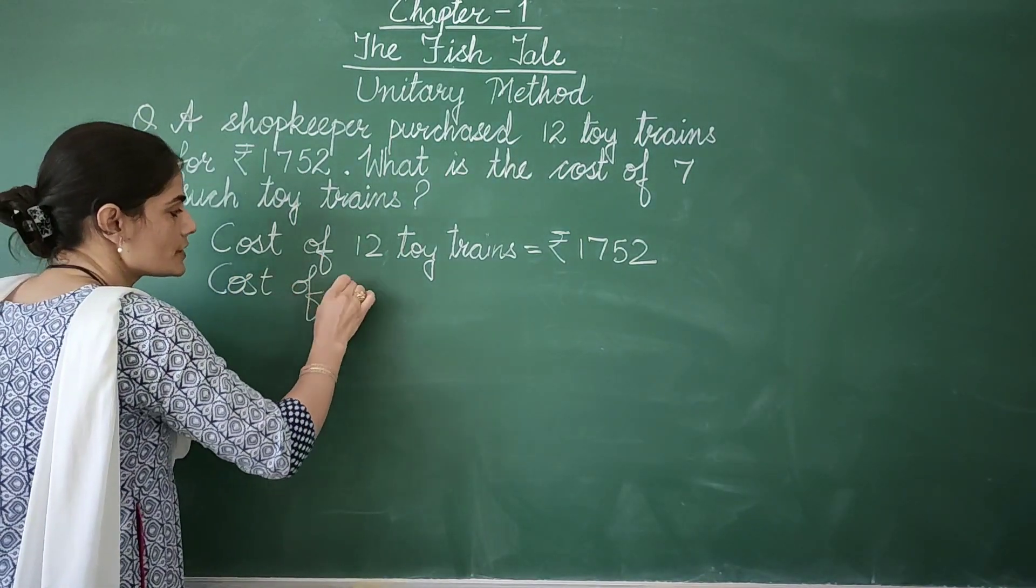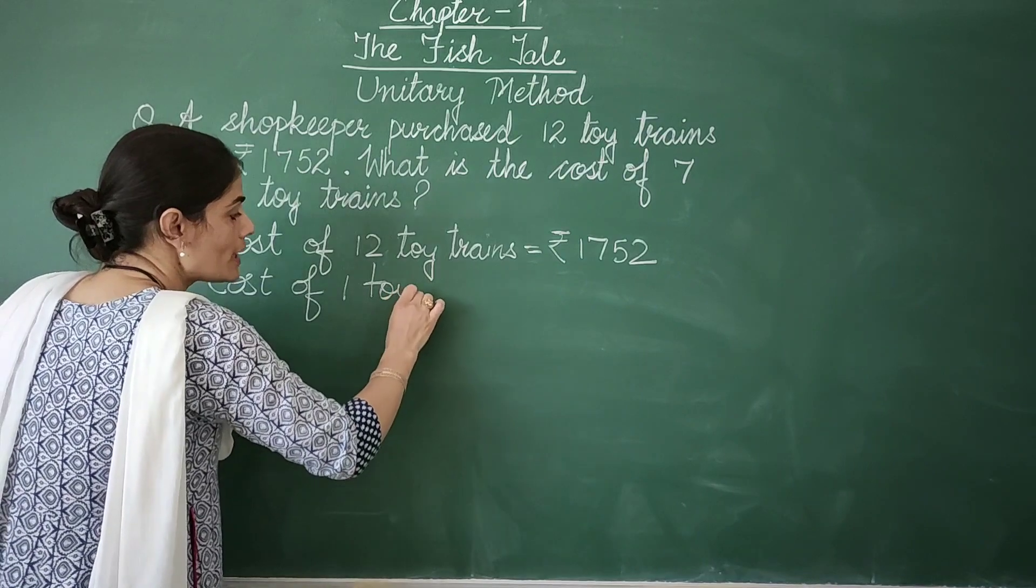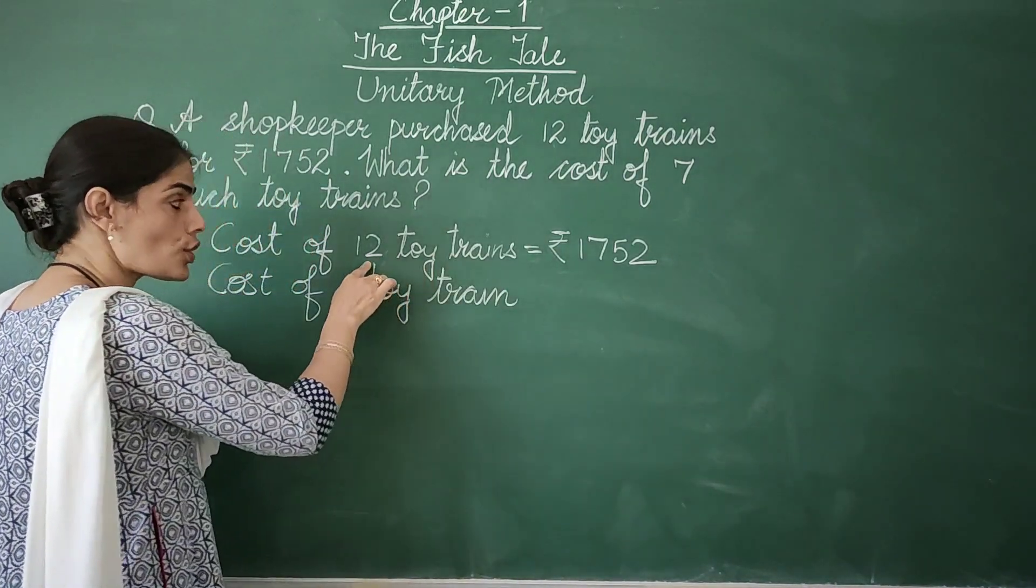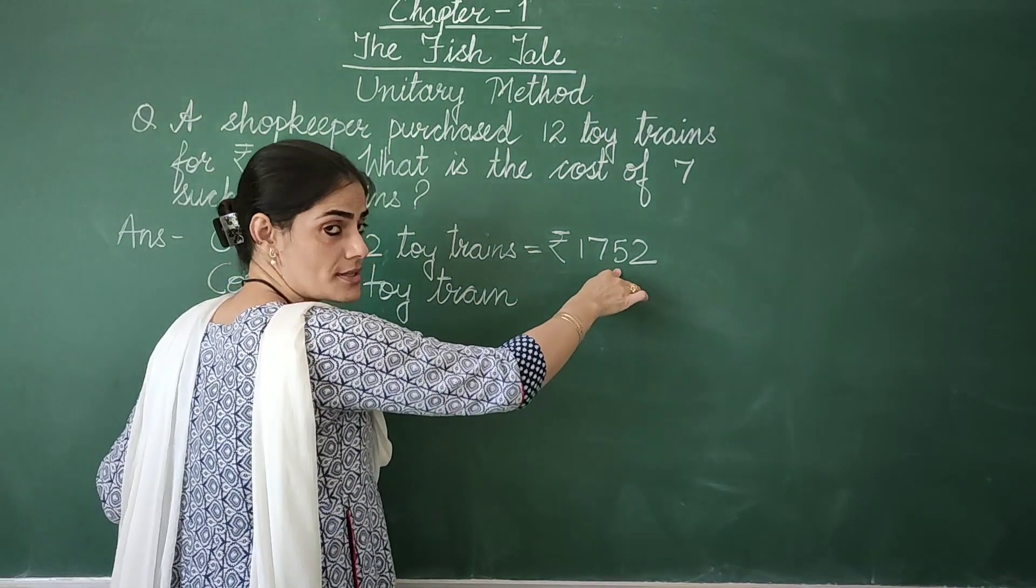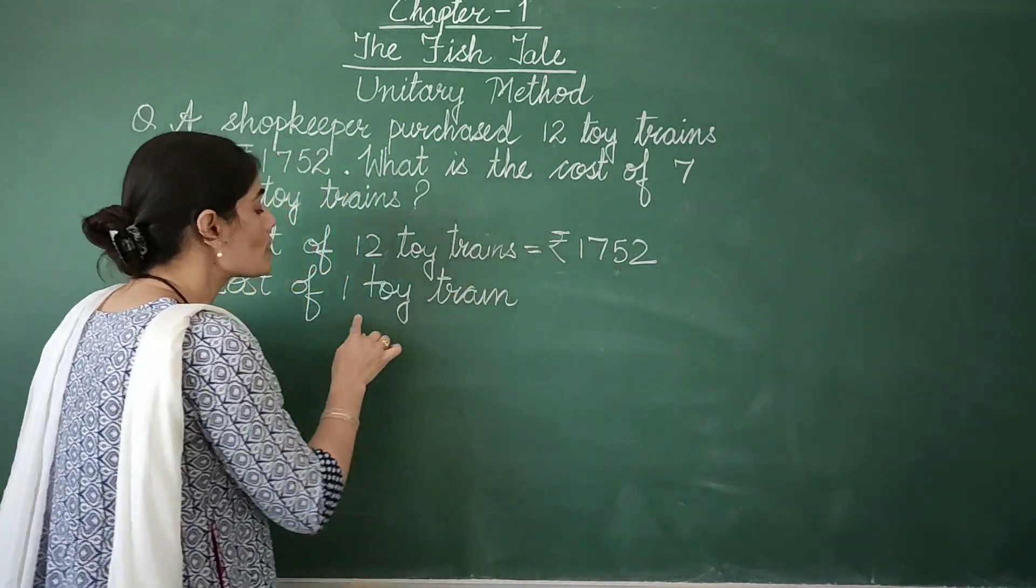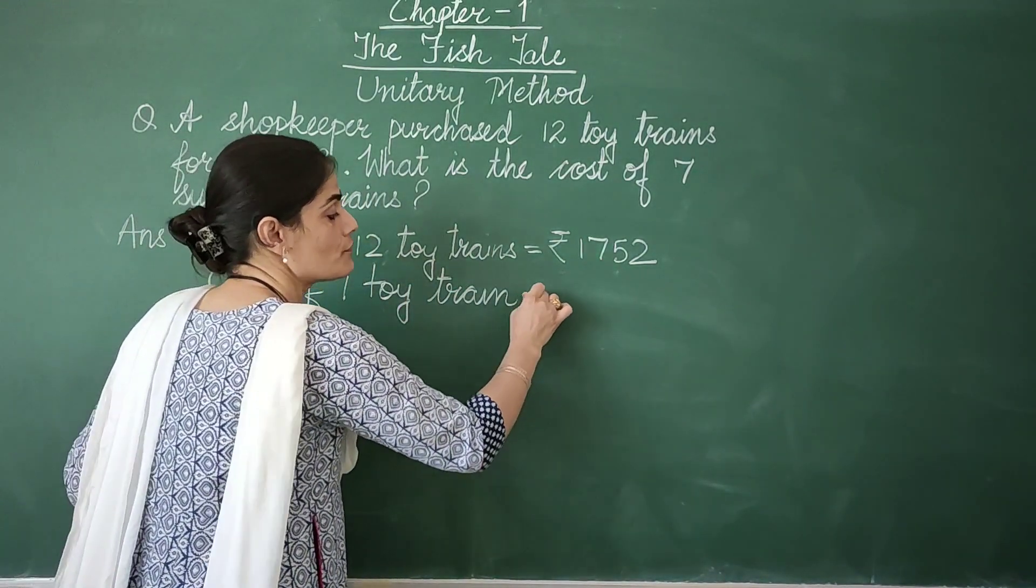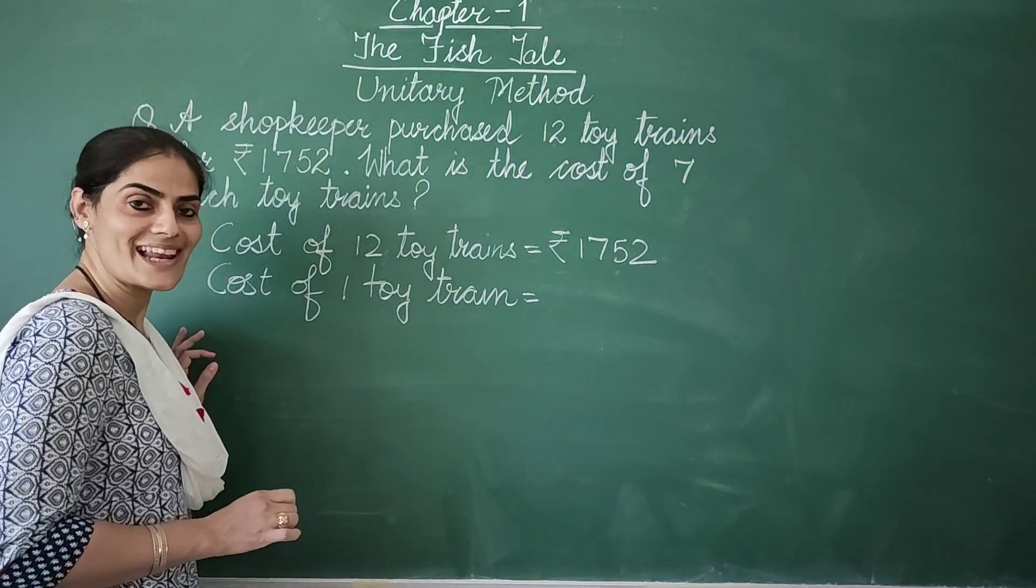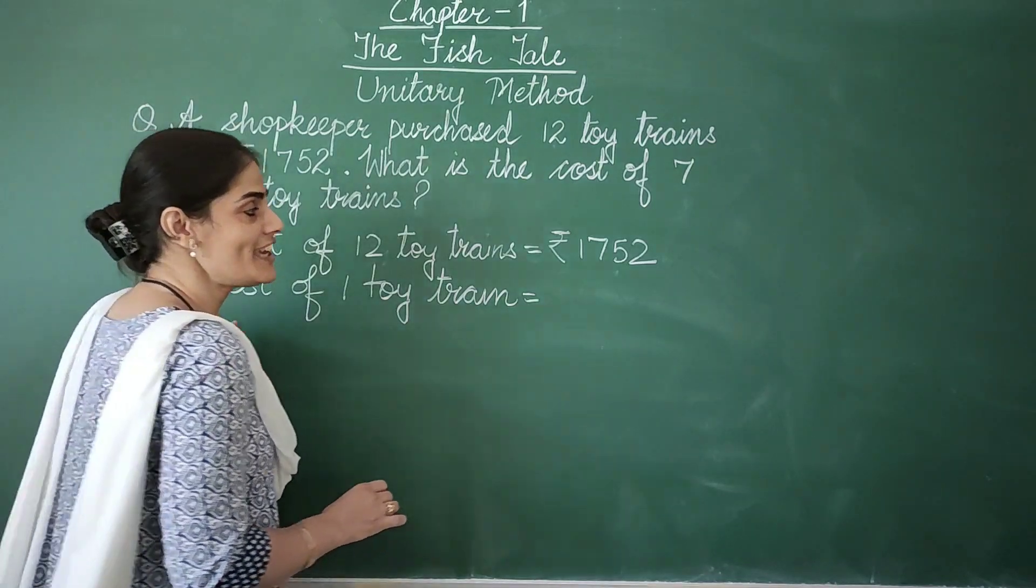So children, cost of 1 toy train is going to be more or less. If the cost of 12 is 1752, cost of 1 toy train will be less. And when we expect the answer to be less, what do we do? We divide.